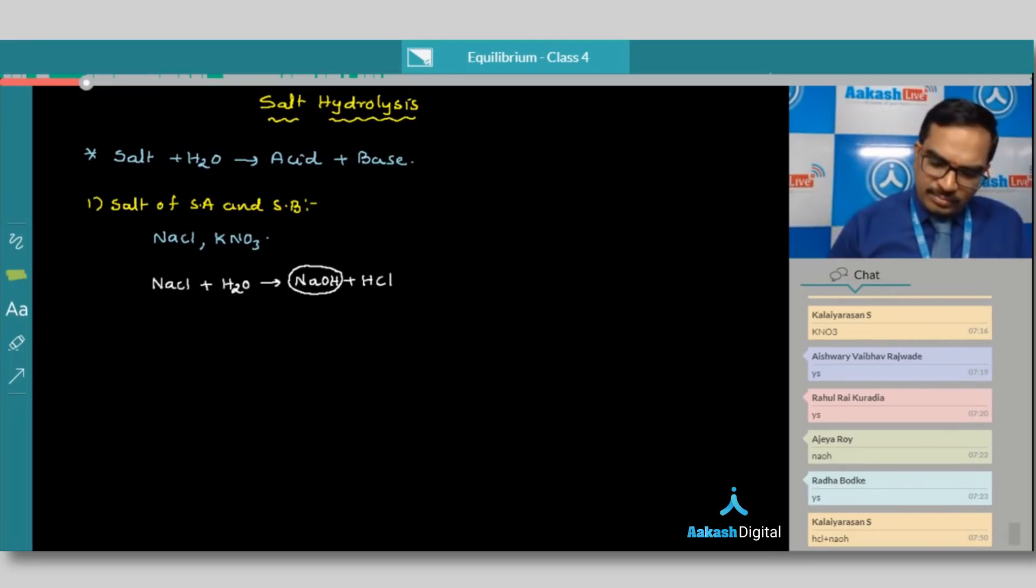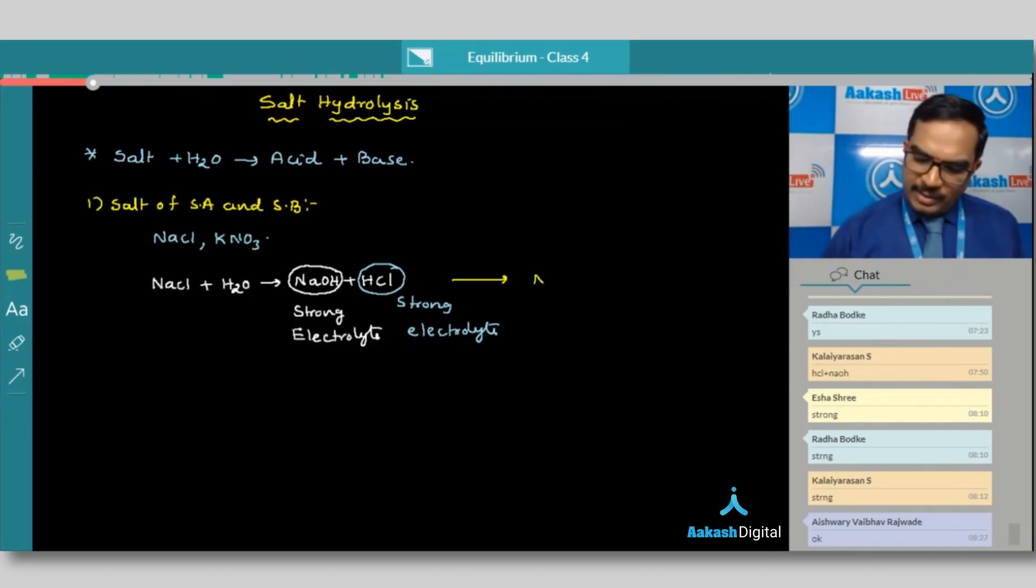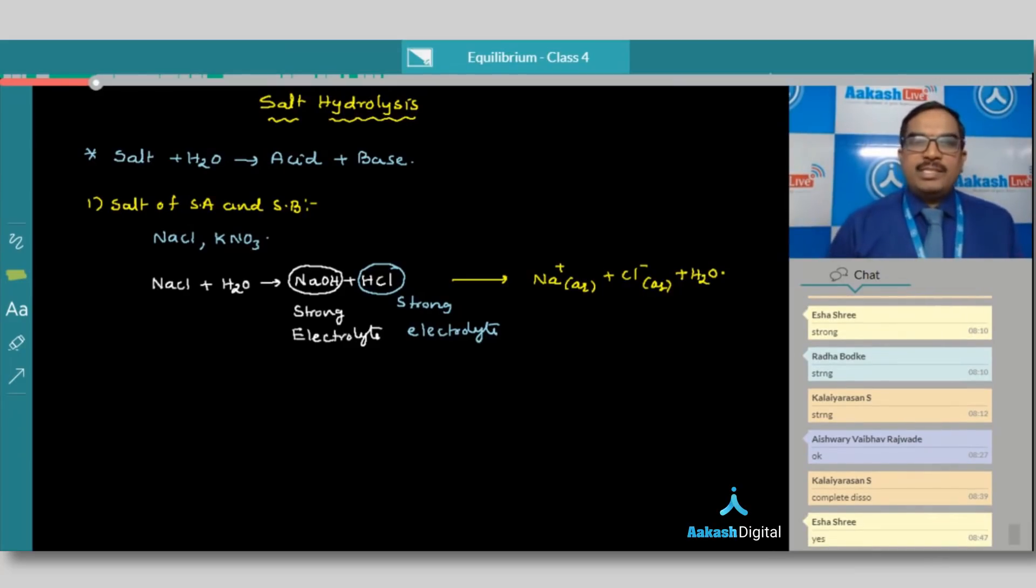But here, sodium hydroxide is a strong electrolyte. What about HCl? HCl also strong electrolyte. It is present in the form of ions only. That means here in the overall reaction process, we can understand that sodium ions will be hydrated and chloride ions will be hydrated. So water remains as it is.